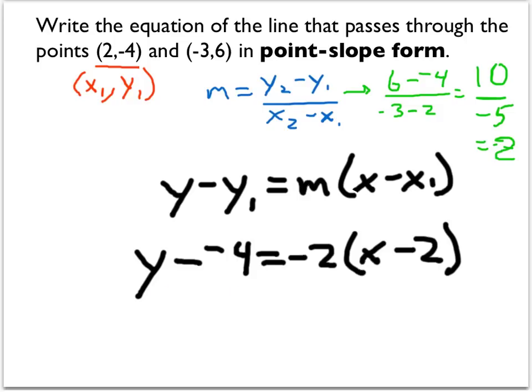We have y minus negative 4. Of course, when you subtract a negative, that's positive. So final answer, y plus 4 is equal to negative 2 times the quantity x minus 2.